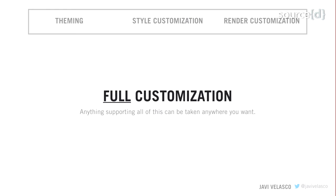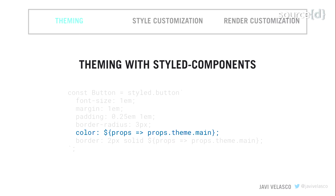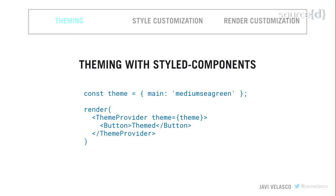How do you solve theming with styled-components? It's very, very easy. You interpolate a function assigning a color from a 'theme' property. Styled-components implements the context provider pattern — like the Redux Provider. You use ThemeProvider, pass a theme object, and it's automagically injected into all styled-components. Now you have a themed button — and the best part is it's reactive. If you change the theme, it re-renders with the new theme value.